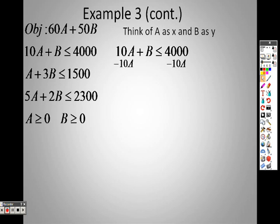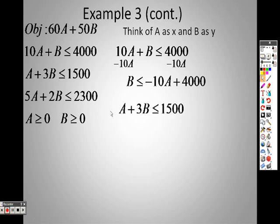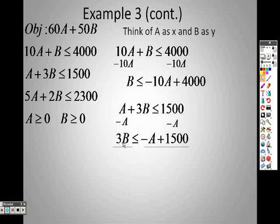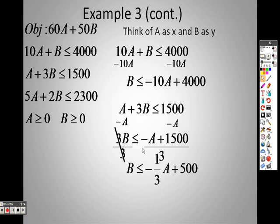So to solve for Y or solve for B, I would just move that over. So here is Y. Remember, Y is B, so that one's solved. Over here, to solve the next one, I would subtract A on both sides. And to get B all by itself, or Y, in other words, I would divide both sides by 3. And I would get B is less than or equal to negative 1 third A plus 500. So I have 1, I have 2.